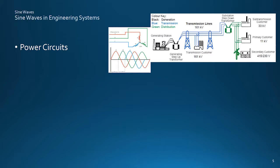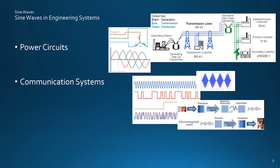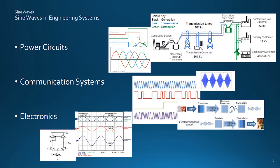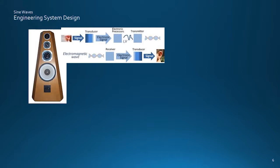But there are many different types of engineering system and many different types of signal. For example, in addition to power systems, sine waves are particularly important in communications and electronics. But they also enable powerful means of analyzing and designing systems, whatever signals are involved.